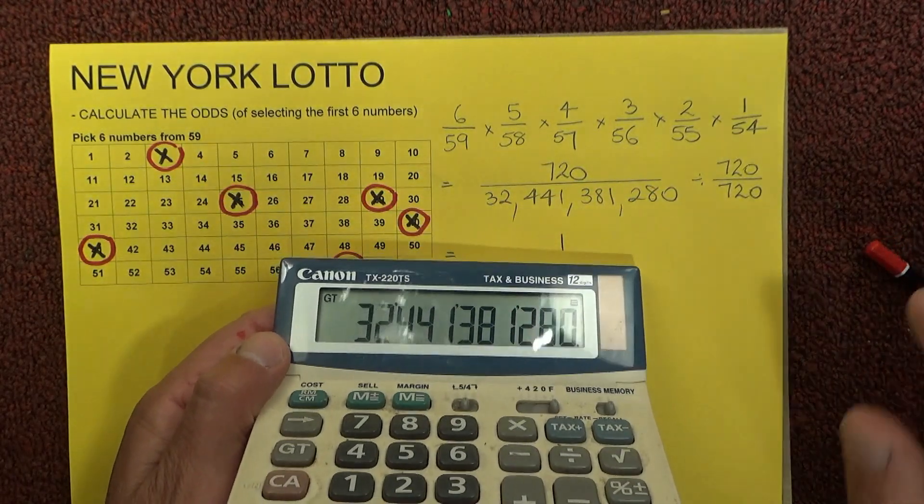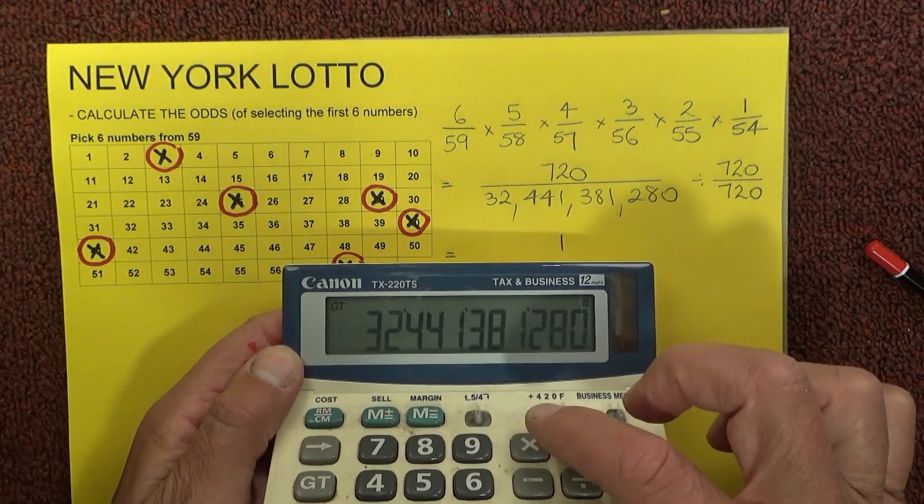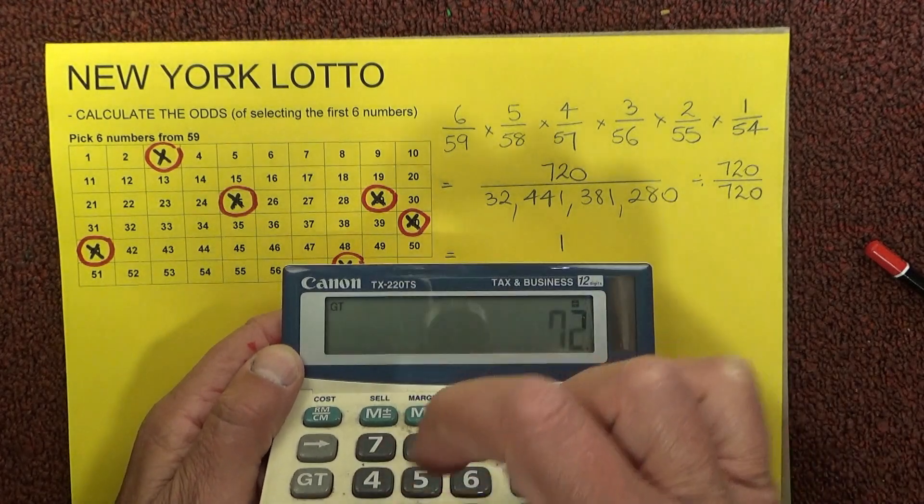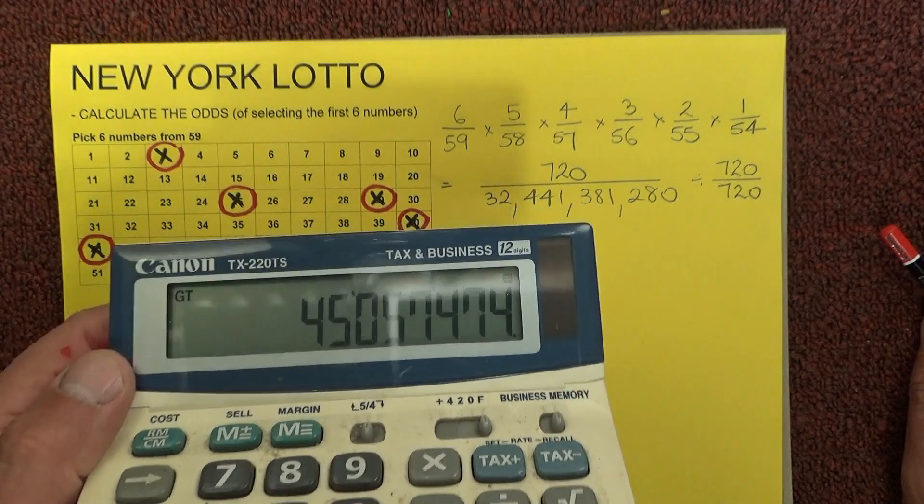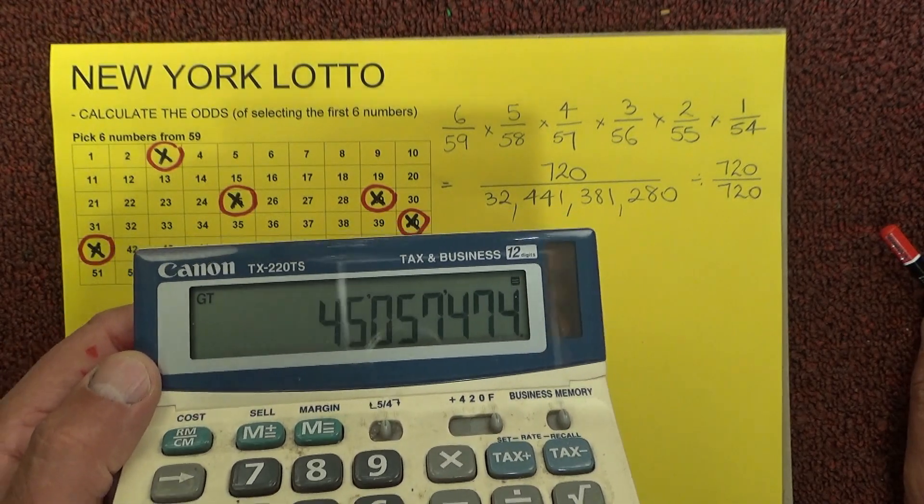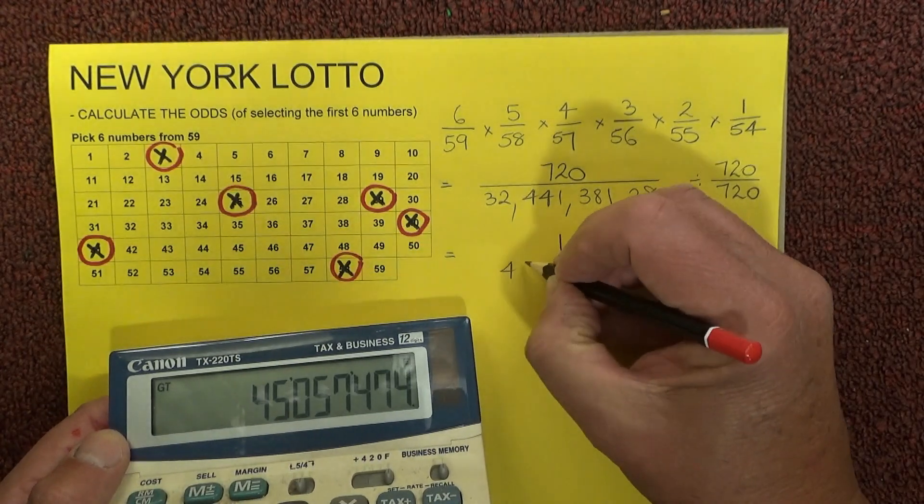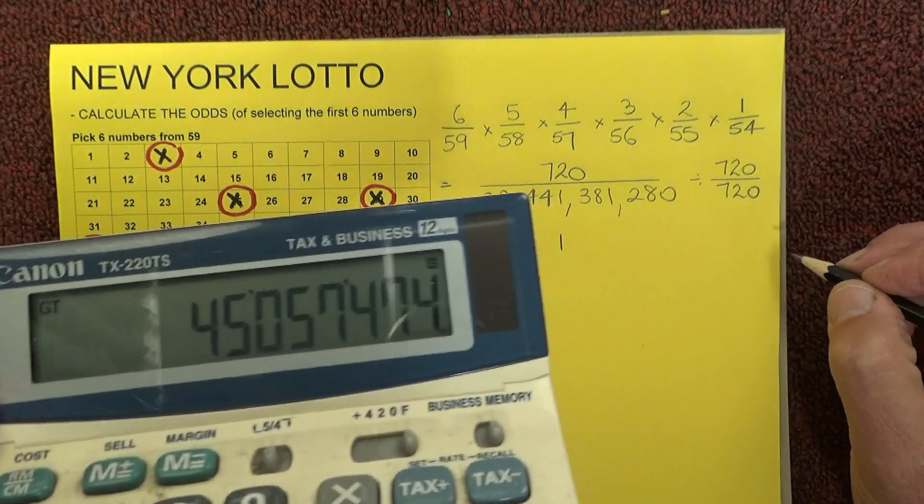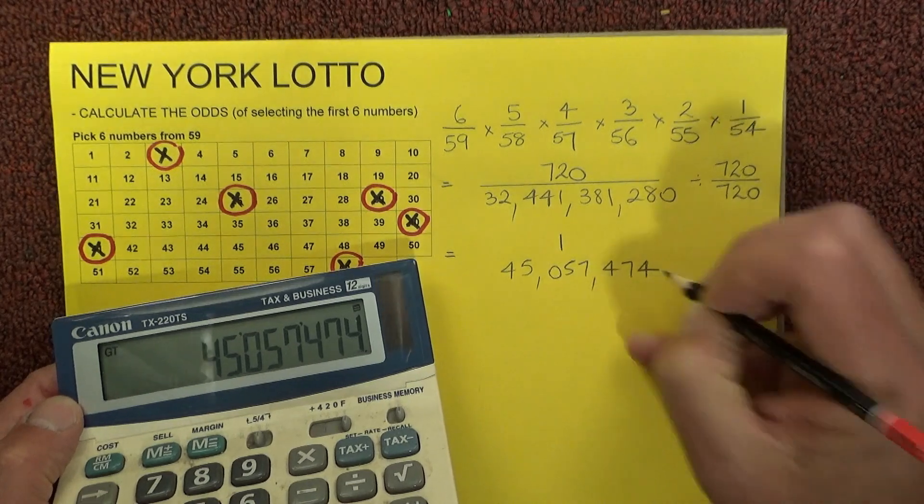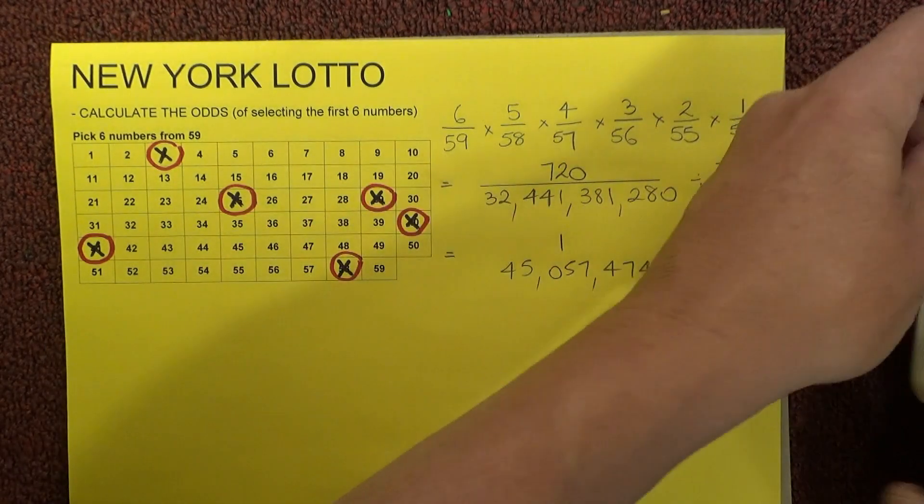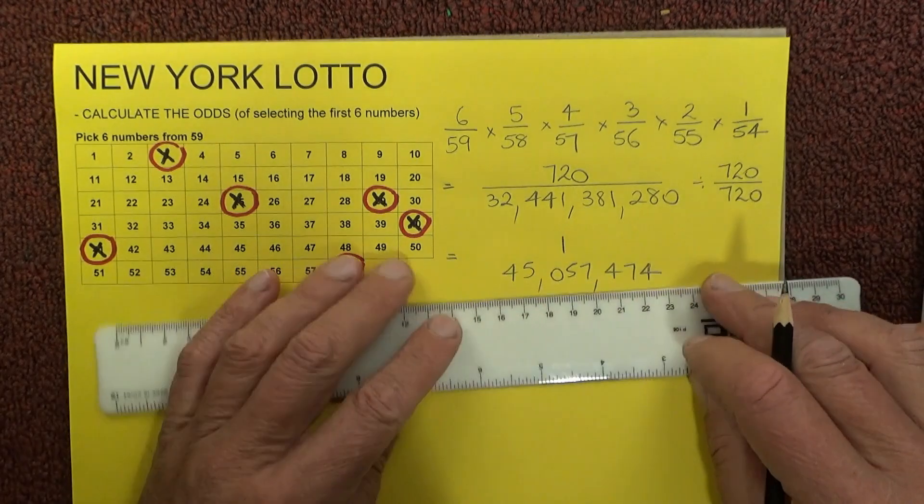And if I take that 32 billion number and divide that also by 720, we come up with a more reasonable number of 45 million, 57,474.